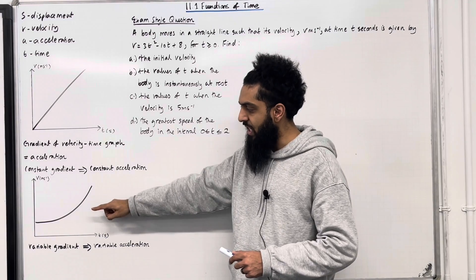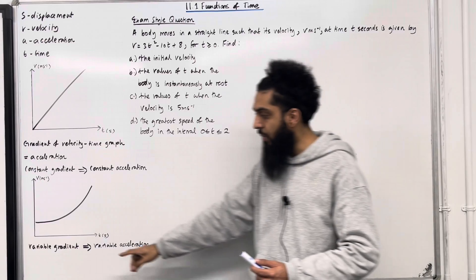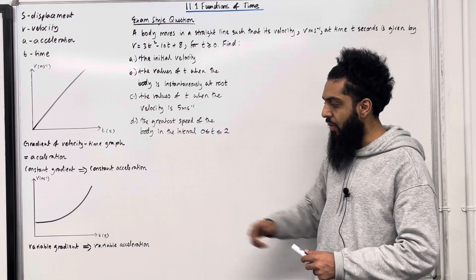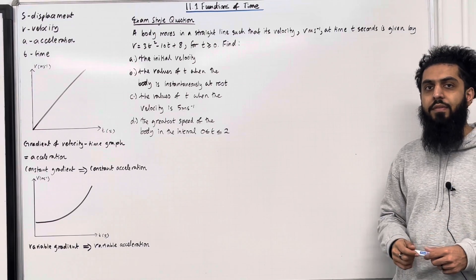Moving on to this velocity-time graph, this time we have a curve, and so we have a variable gradient. This implies that we have a variable acceleration. So in Chapter 11, we're going to be focusing on variable acceleration.